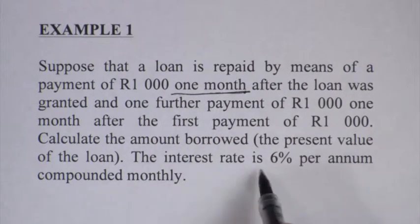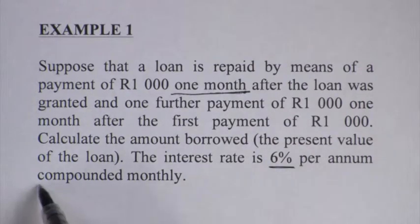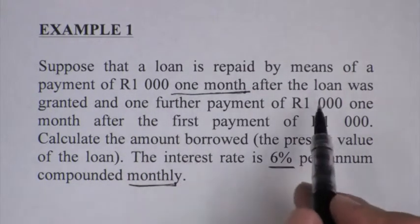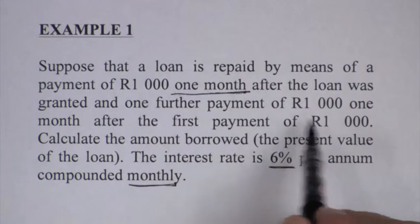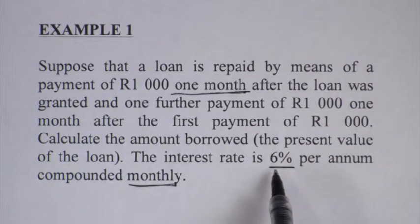The interest rate is 6% per annum compounded monthly again. So the payments are 1000, one month after the loan was granted. There will be two payments. 6% per annum compounded monthly. Let's quickly calculate this problem.